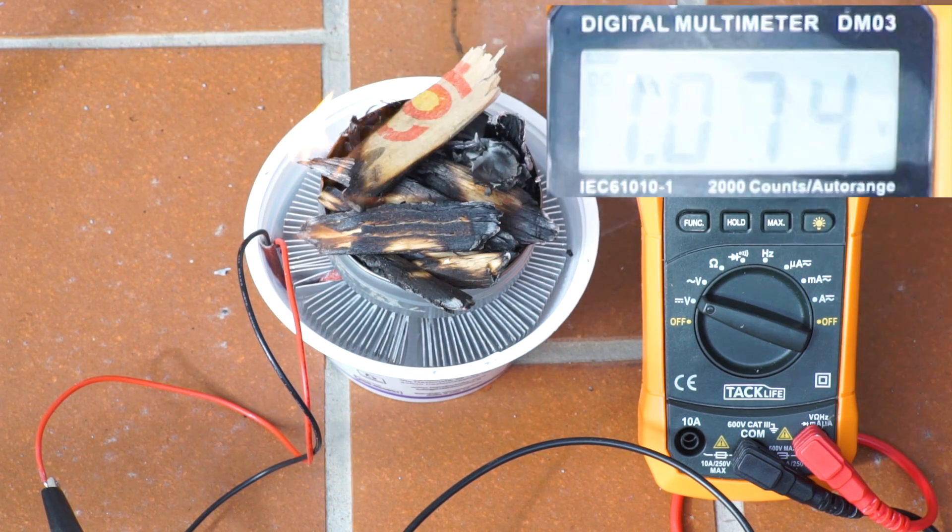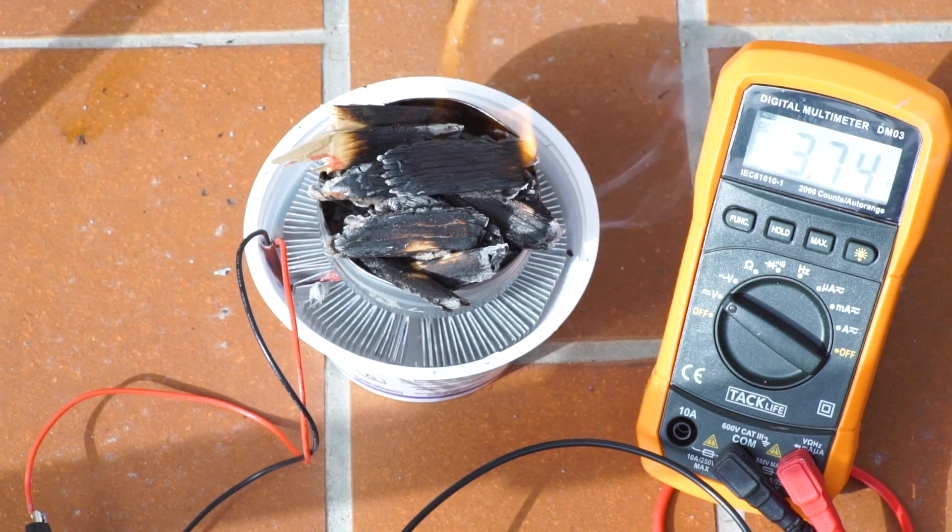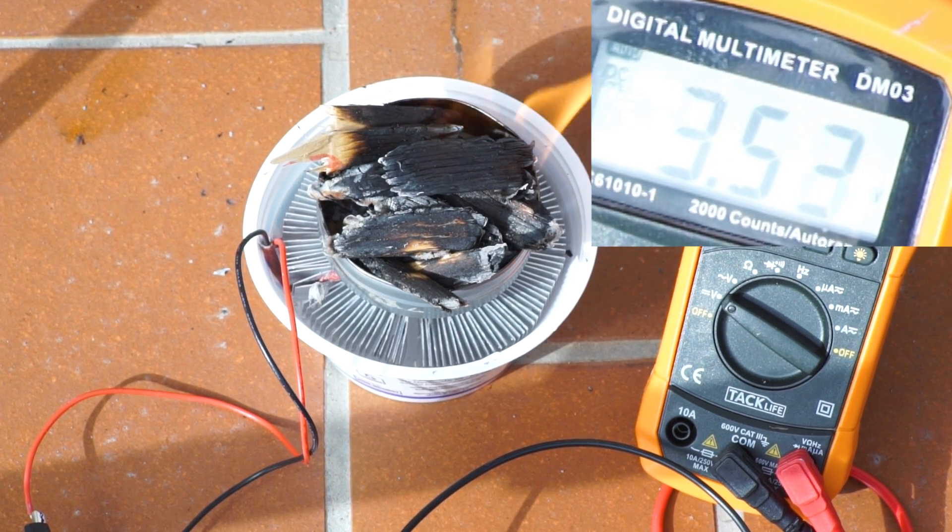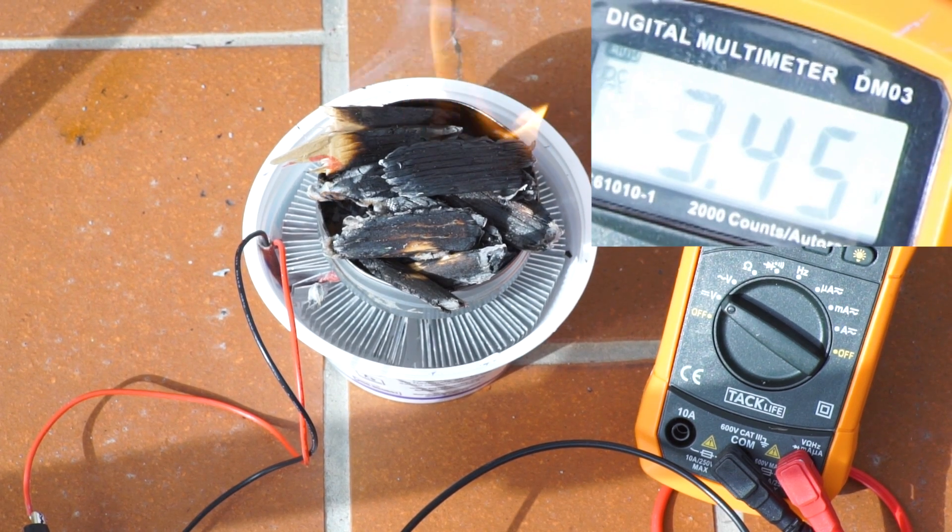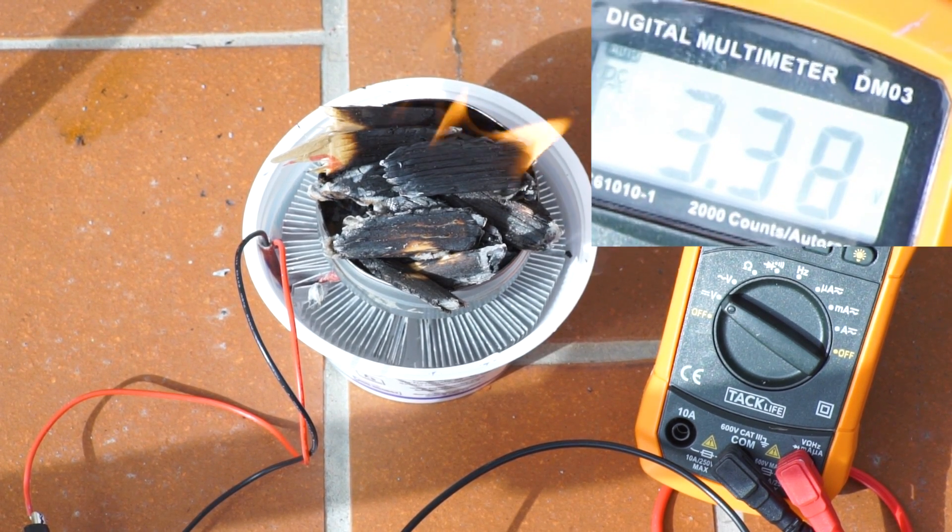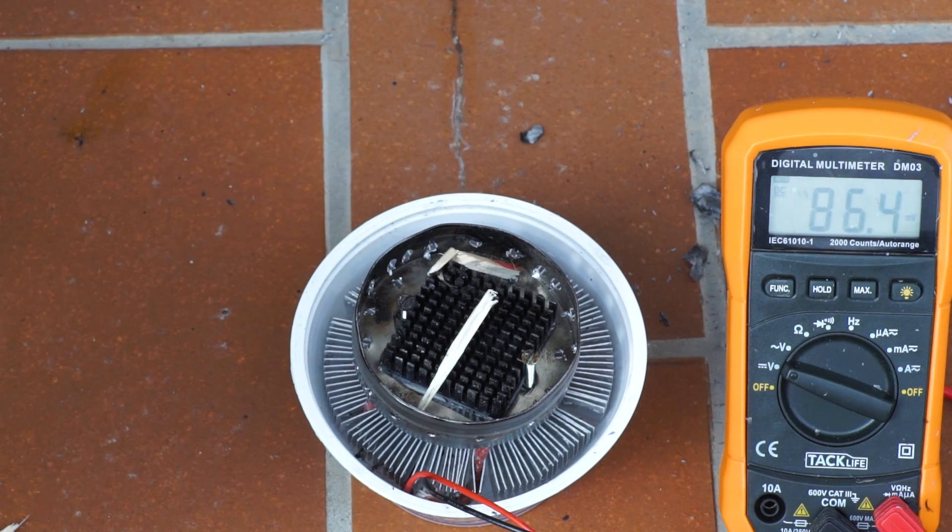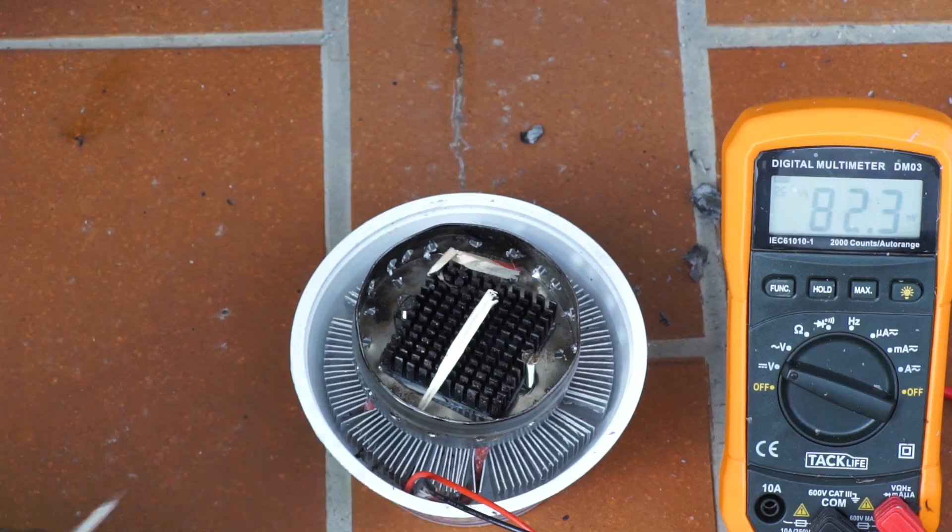We can see that the voltage rose up at first slowly but I wasn't able to go beyond 3.7 volts. Maybe it's because the fire doesn't get enough air from the bottom, so I tried to make some ventilation holes. Let's see if this improvement really matters.